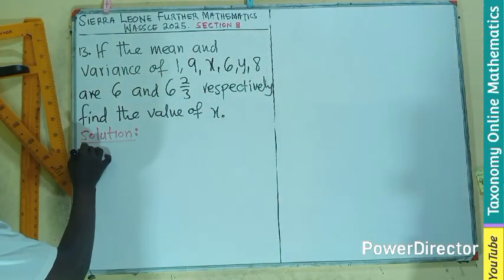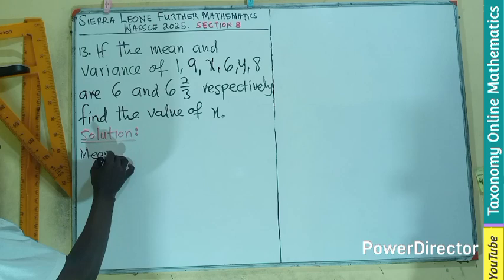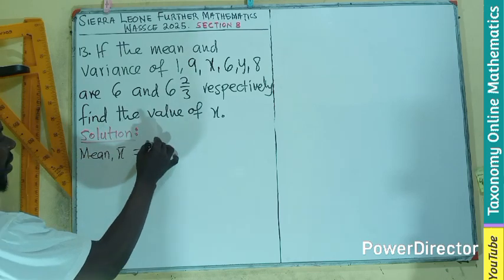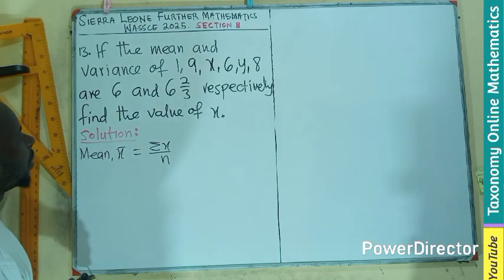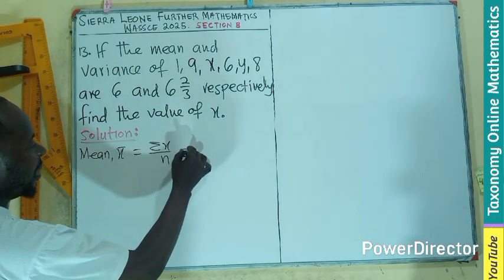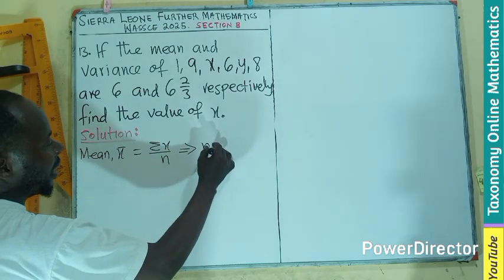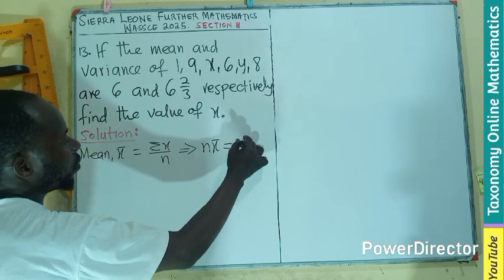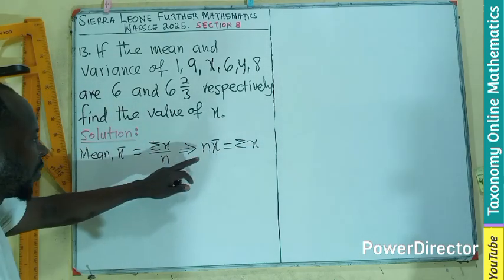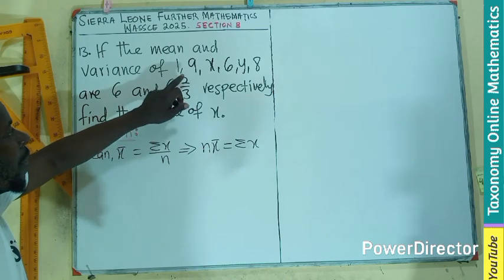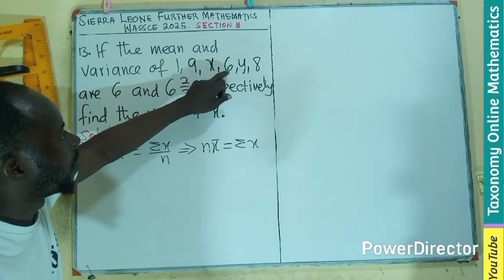So, we know that if I'm dealing with the mean, which is x bar, it is sigma x over N. This, I can still say that N times this equals sigma x. So, right away, N means the number of items: 1, 2, 3, 4, 5, 6.